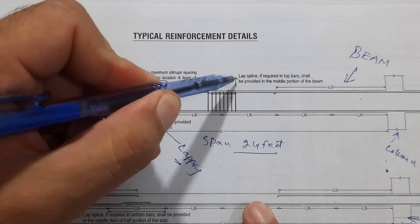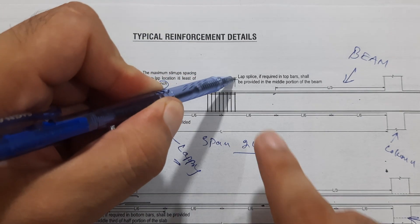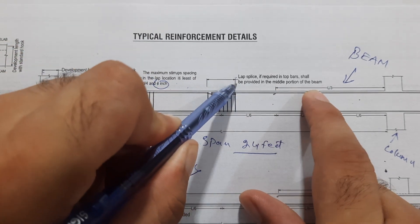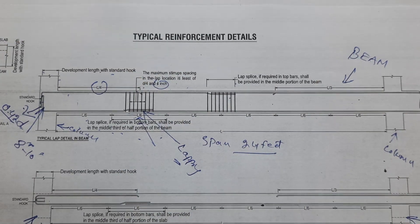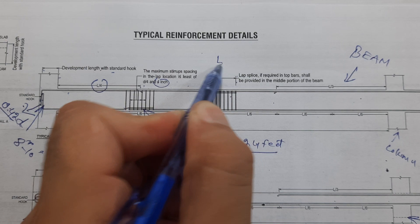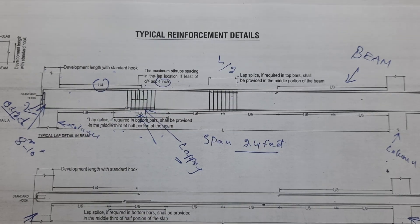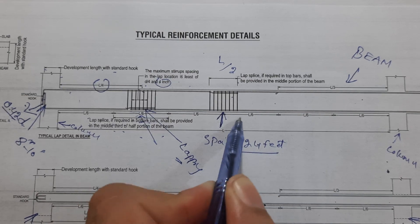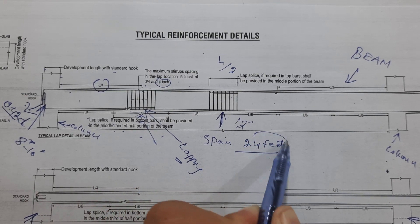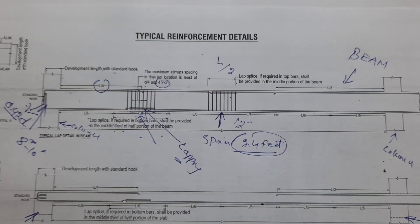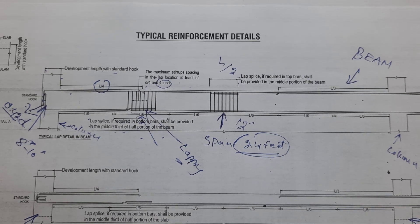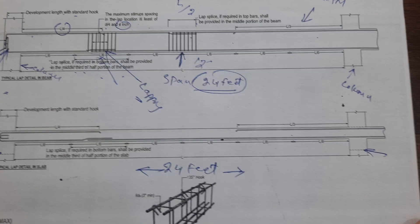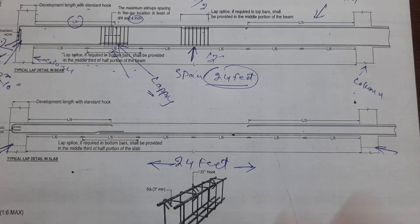Lap or splice if required in top bars shall be provided in the middle portion of the beam — at l/2, where l/2 is this location. You can see clearly that this is 12 feet, because the total span is 24 feet. This is a very important point to know.